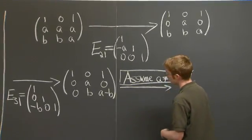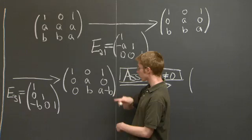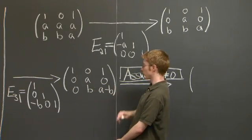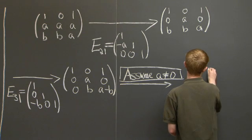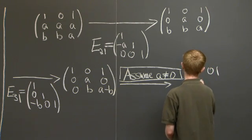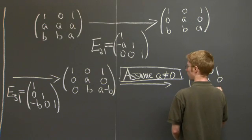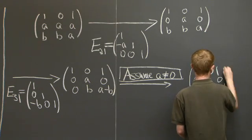Now, what do we do? Well, we can replace the third row by the third row minus b over a times the second row. And we just get this. a minus b.